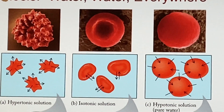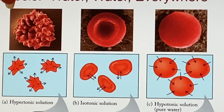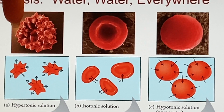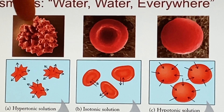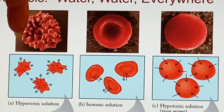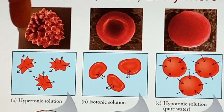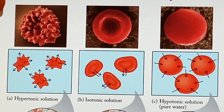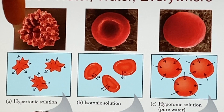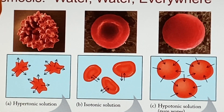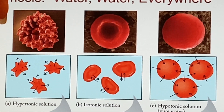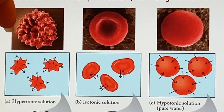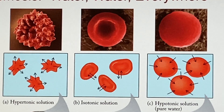In a hypertonic solution, water leaves and the cell shrinks — you can think of what an old balloon looks like after it starts losing its air: it gets kind of lumpy and is no longer perfectly smooth. That's what you see happen to the red blood cell.